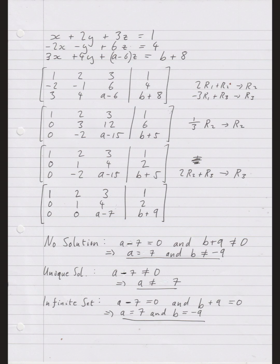Here's an example for Gaussian elimination. We have a system of three equations in three variables x, y, and z, and in the coefficients we have two unknowns a and b. The first thing to do is write down your augmented matrix — that's just taking all the coefficients and writing them down. So here we have 1, 2, 3; here we have 3, 4, a; and minus six times z goes in here as a minus six.